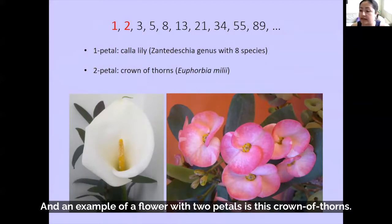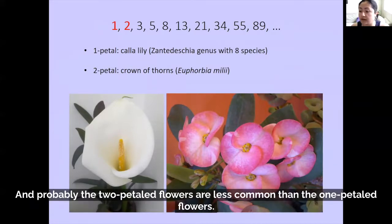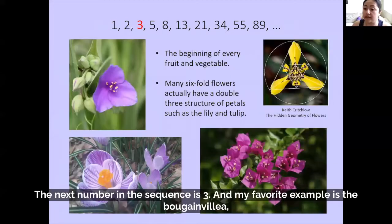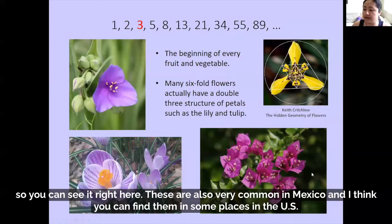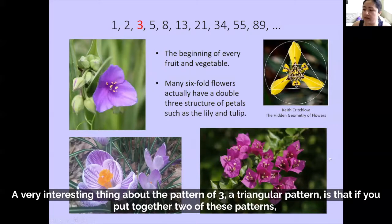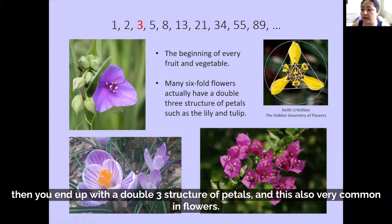An example of a flower with two petals is this crown of thorns. Two-petal flowers are probably less common than one-petal flowers. The next number in the sequence is three, and my favorite example is the bougainvillea, also very common in Mexico and in some places in the U.S. A very interesting thing about the pattern of three — a triangular pattern — is that if you put together two of these patterns, you end up with a double-three structure of petals, which is also very common in flowers.